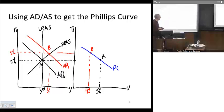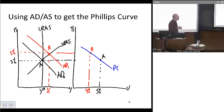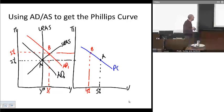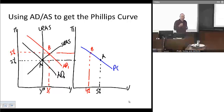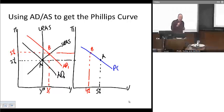Here I've set up a basic aggregate demand-aggregate supply model. We're going to start at point A, just for the sake of argument. The economy will be in long-run equilibrium with an inflation rate of 2% and will be at equilibrium at its full employment level. We want to map out how we can go from our basic aggregate demand-aggregate supply model over to the Phillips curve.